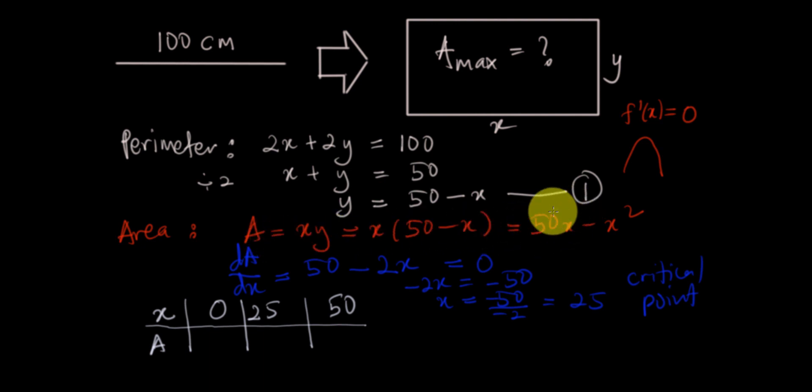For example, if x is 0, A is 0. If 25, 50 times 25 minus 25 squared, you get 625. And if x is 50, 50 times 50 minus 50 squared, also 0. It means that this is the absolute max point.